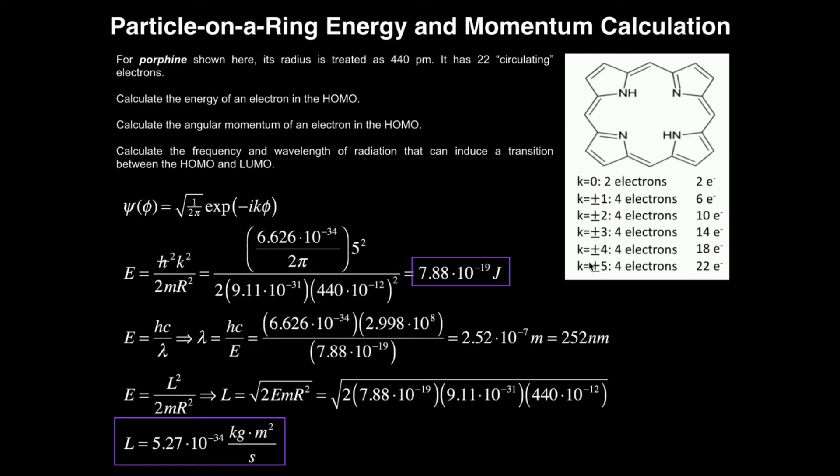Now let's actually figure where the energy is for the highest occupied molecular orbital, meaning electron number 22. So we have two electrons at K equals zero. That's two. Go to K equals plus or minus one. That goes up to six. Plus or minus two, add four more. That's 10. Plus or minus three, add four more. Plus or minus four, add four more. Plus or minus five, we're going to add four more. That gets us up to a grand total of 22.